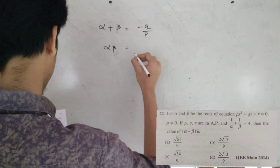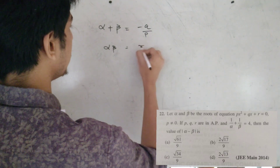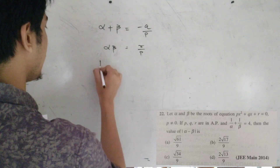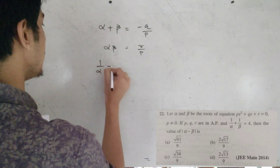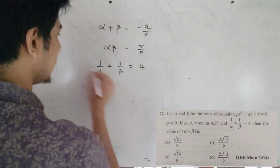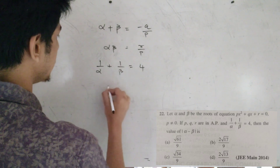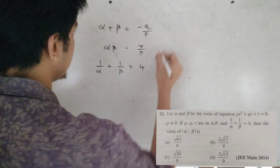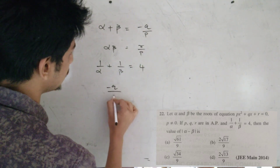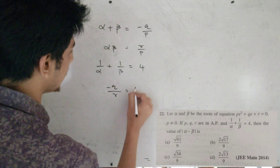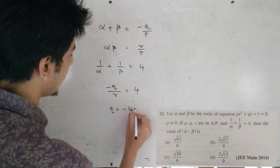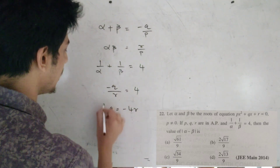The product of roots is αβ = R/P. Now 1/α + 1/β = (α + β)/(αβ) = (−Q/P)/(R/P) = −Q/R = 4, so Q = −4R.